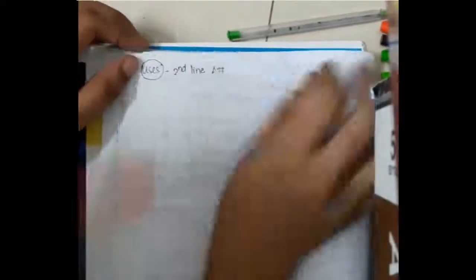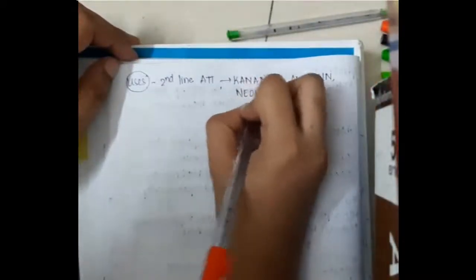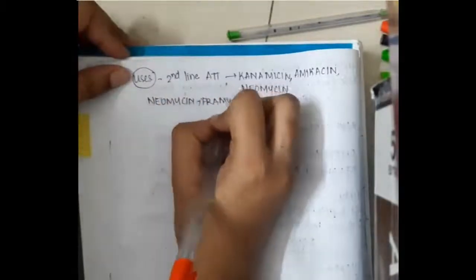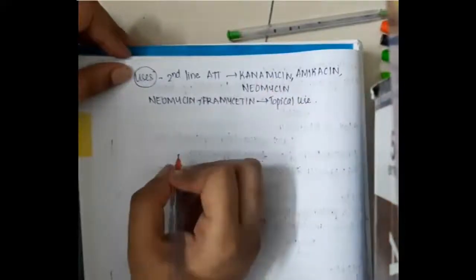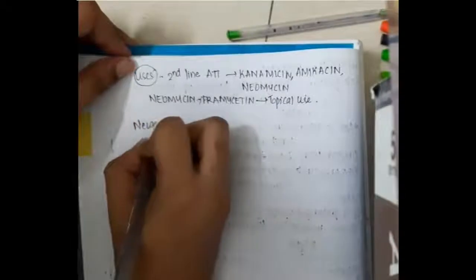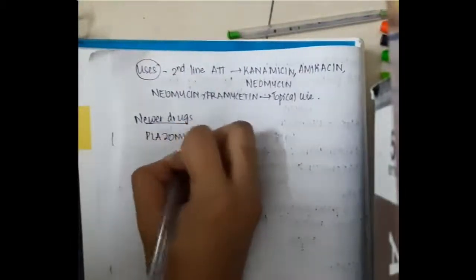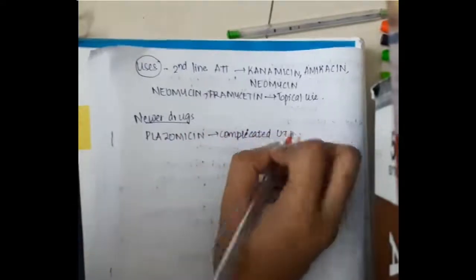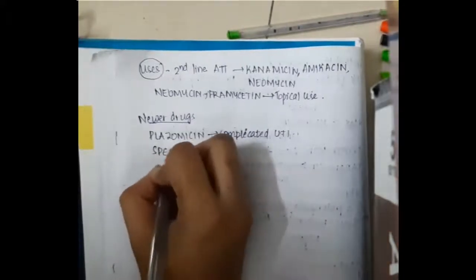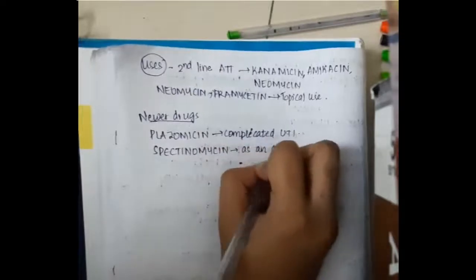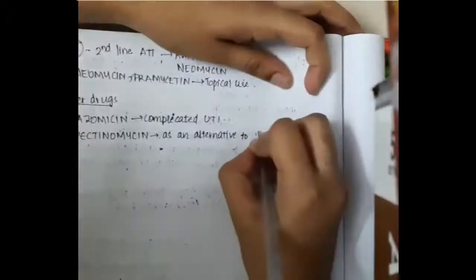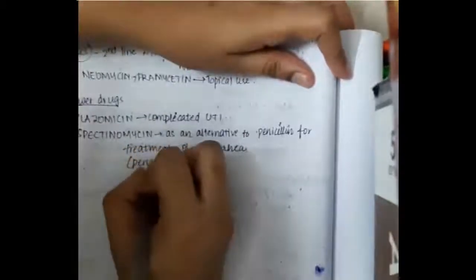In terms of uses, aminoglycosides such as kanamycin and amikacin are used as second-line drugs in anti-tuberculosis therapy. Neomycin and framycetin are used topically. Newer drugs include plazomycin, used in complicated UTI, and spectinomycin, used as an alternative to penicillin for penicillin-resistant or penicillin-allergic gonorrhea.